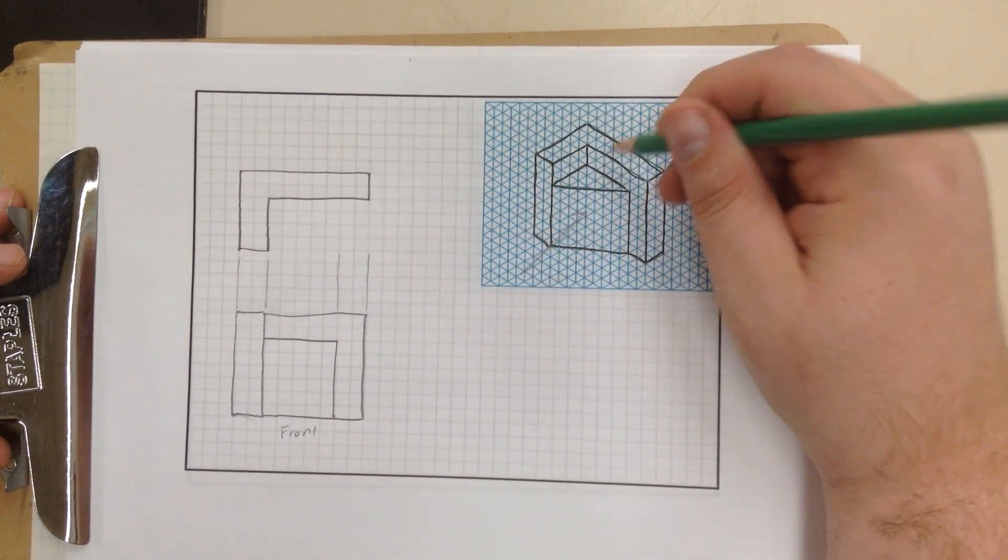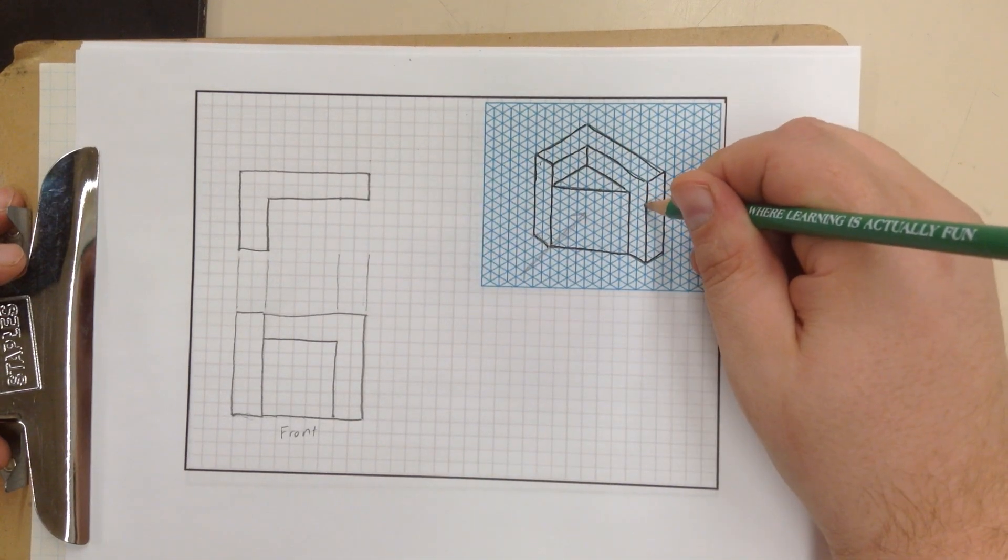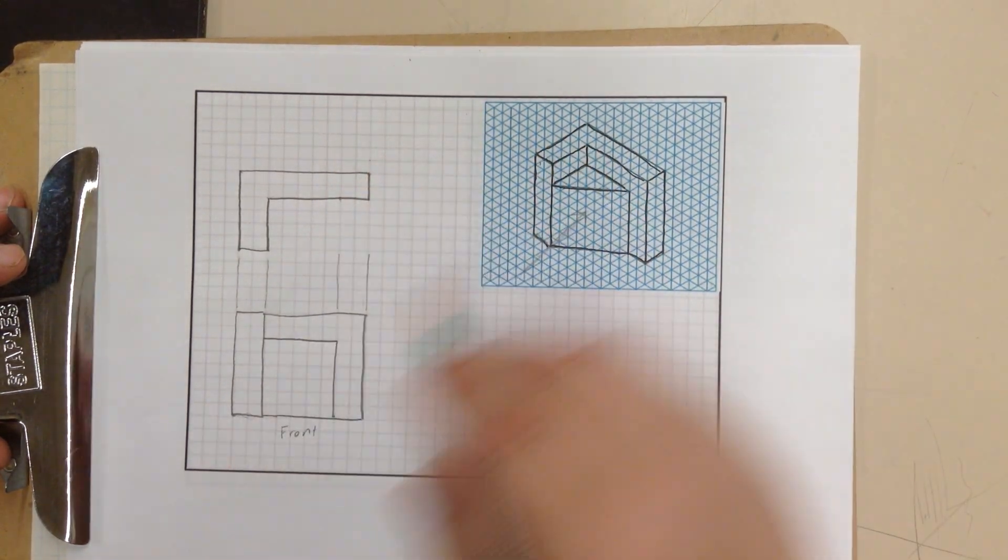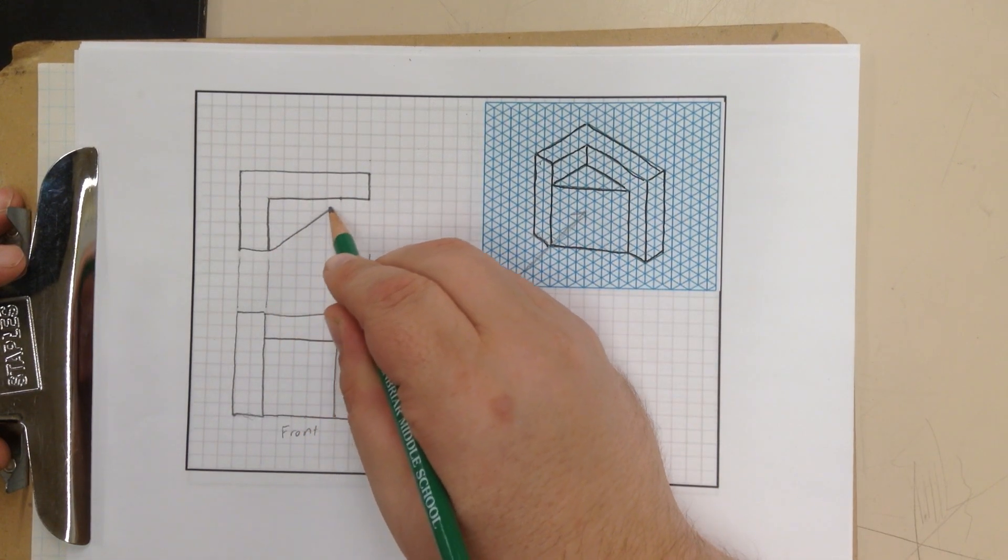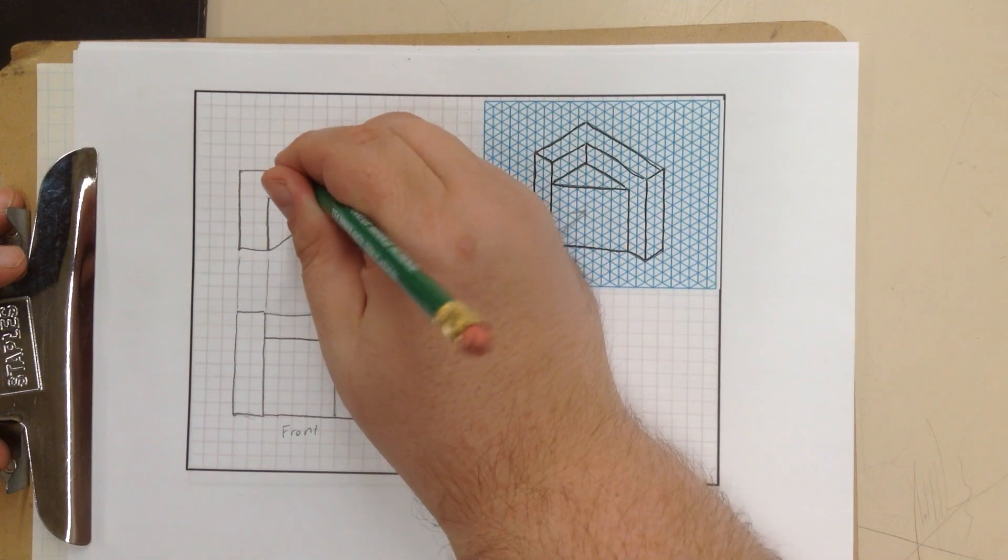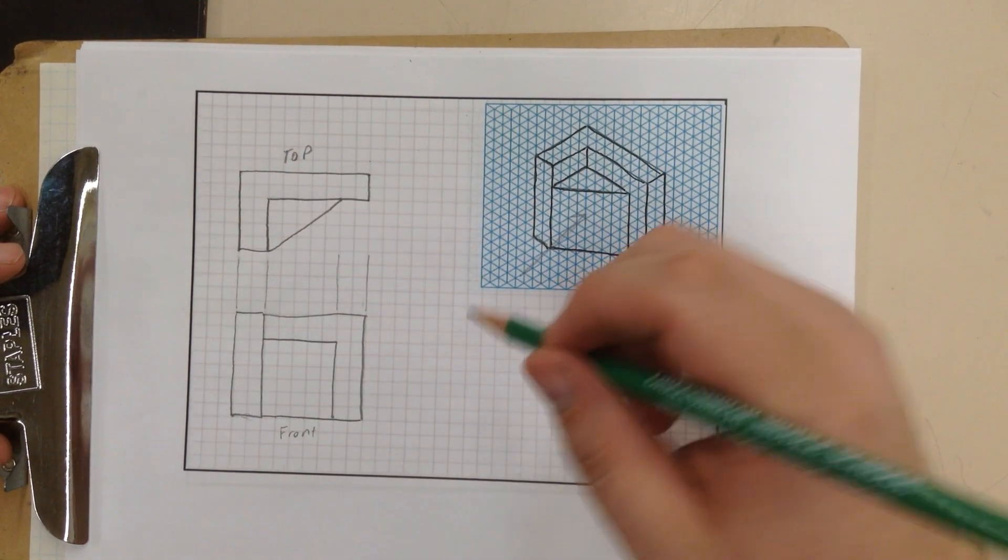Now next I have this triangular area right here. So looking at it directly down, it is 2 points away. 1, 2. And it is flush with that. So I can just go right there. And that will be the top view of this drawing.